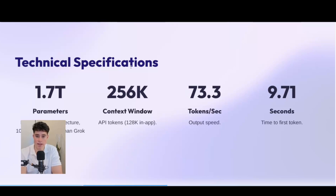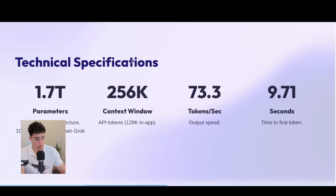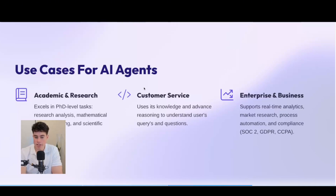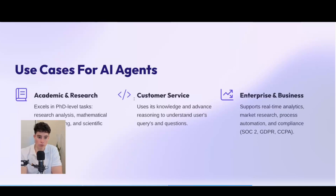The parameters represent the knowledge the AI agent has. Comparing to other models: Claude has only 500 billion, Gemini has 1 trillion — Grok has a much wider range of accessible knowledge. At 73.3 tokens per second, this AI agent will be extremely fast in its responses. As models and LLMs get better, the AI agents we build for businesses will get better too.